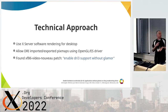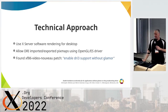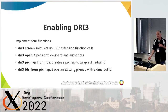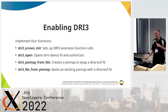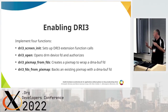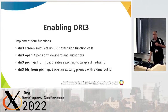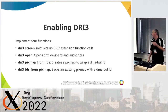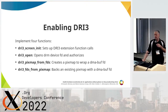Someone had found a Nouveau patch where DRI3 was enabled without glamour. For enabling DRI3 there are four main functions to implement: the screen init, which sets up the DRI3 extension; DRI3 open, which opens the device and authorizes its usage; pixmap from FDs, which creates a pixmap wrapping a DMA buffer file descriptor; and FDs from pixmap, which backs an existing pixmap with a DMA buffer.